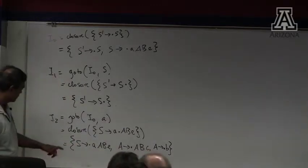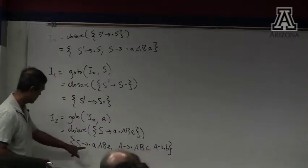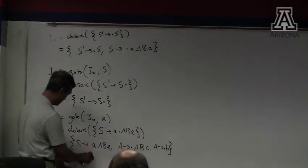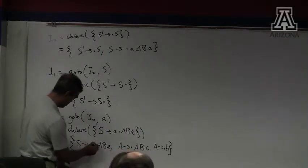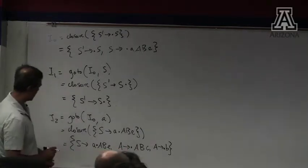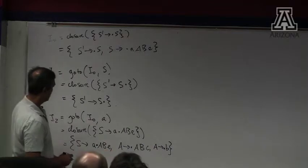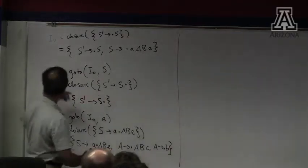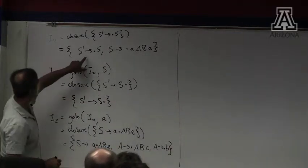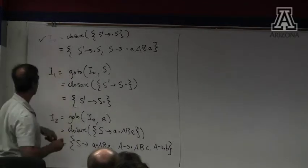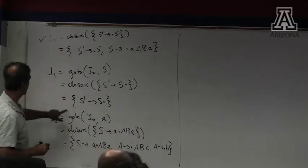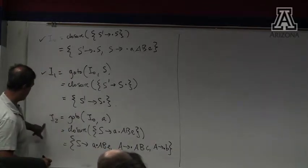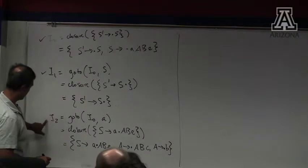I've done all the closures out of I0, so that's taken care of. I1 doesn't have any closures going out of it. Let's compute go-tos out of I2.